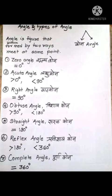The seventh type of angle is complete angle. The angle whose measure of angle is 360 degree.